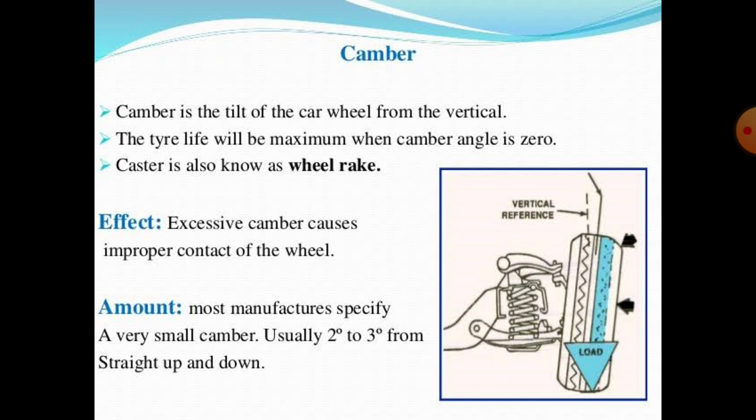Excessive camber causes improper contact of the wheel with the road surface, resulting in wear on one side of the wheel. Caster angle is also known as wheel rake. Most manufacturers specify a camber angle of about 2 to 3 degrees.